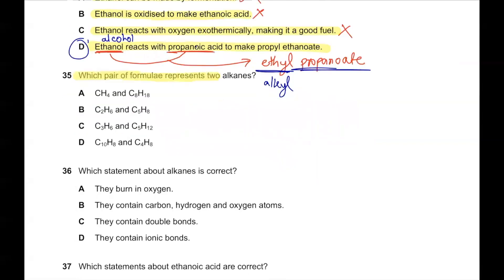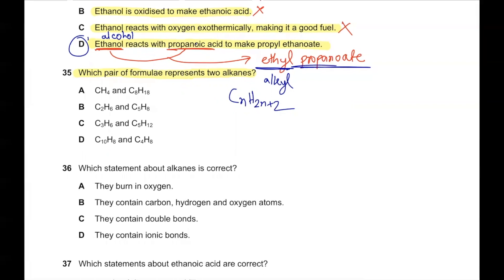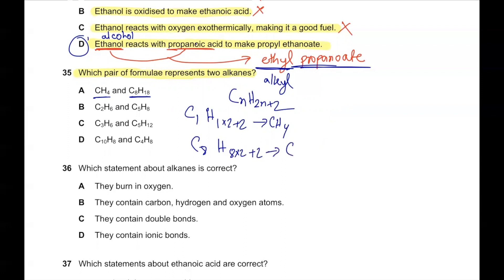Question number 35. Which pair of formulas represents two alkanes? Alkanes have the general formula CₙH₂ₙ₊₂. For n=1: C₁H₄, which is CH₄. For n=8: C₈H₁₈. The pair CH₄ and C₈H₁₈ both match the formula CₙH₂ₙ₊₂. So 35A is the correct answer.